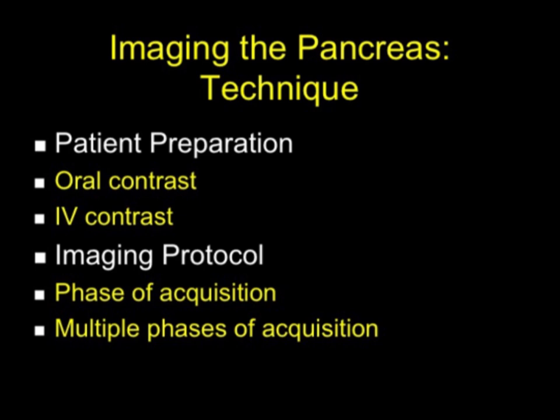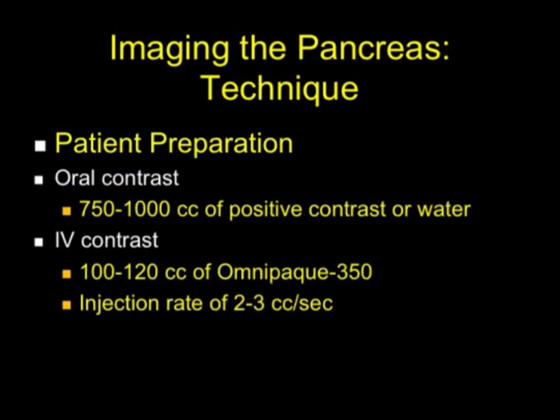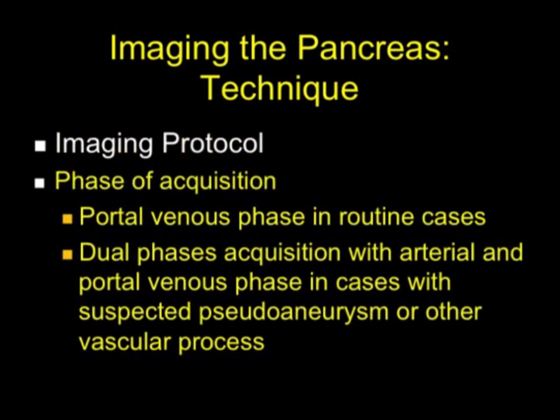When we talk about protocols and phases of acquisition: most patients with pancreatitis do well with one phase — usually venous phase. In patients where you're worried about bleeding, dual phase is very important. We use about 1,000 cc's of water for oral contrast. For IV contrast injection, typically 3 cc's per second works fine for routine pancreatitis. If you're worried about a pseudoaneurysm, go up to 5 cc's per second. We typically now inject 4 to 5 cc's per second. Portal venous phase is satisfactory in routine cases, but dual phase is used in complicated cases, particularly when suspecting vascular processes.